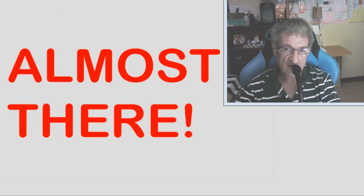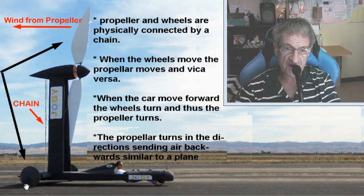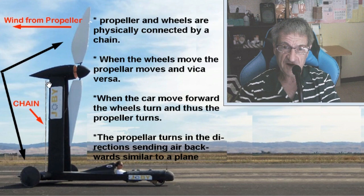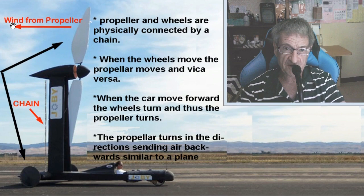Let's talk about Blackbird's gearing. Now, Blackbird has wheels and a propeller and a chain. This chain physically attaches the wheels, the motion of the wheels, to the motion of the propeller. When the wheels go forward, it turns the axle. The axle turns a gear, which is attached to a chain, and the chain will turn the propeller. And it turns it in a direction such that the wind goes backwards. This is the same way as what happens in a plane. The air goes backwards from the forward direction of the plane.